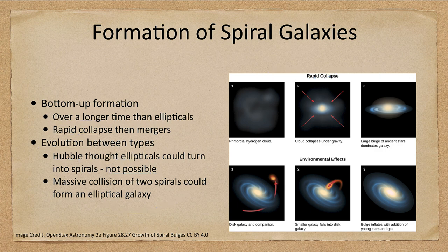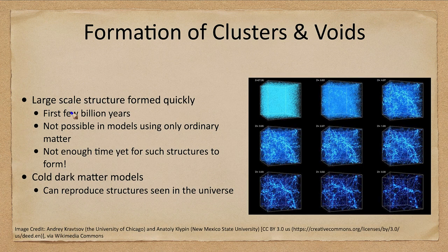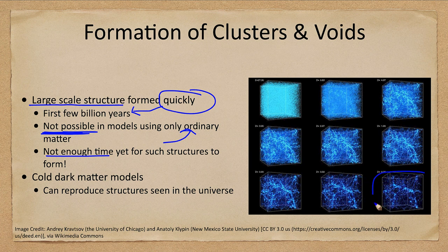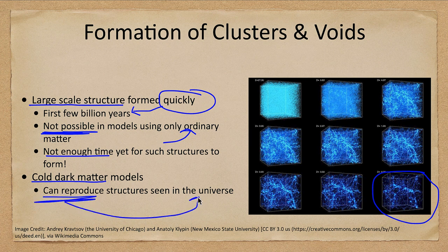Now looking at the larger scales — how do we form the large-scale structure? We know that this large-scale structure formed fast, just in the first few billion years, and this cannot be done using only ordinary matter. If we look at the material we see in stars, galaxies, gas clouds, and radio emission and run simulations under gravity, they will form structure but it will take much longer than possible. There has not yet been enough time for the filaments and voids we see today to have formed. We need some other type of material — cold dark matter.